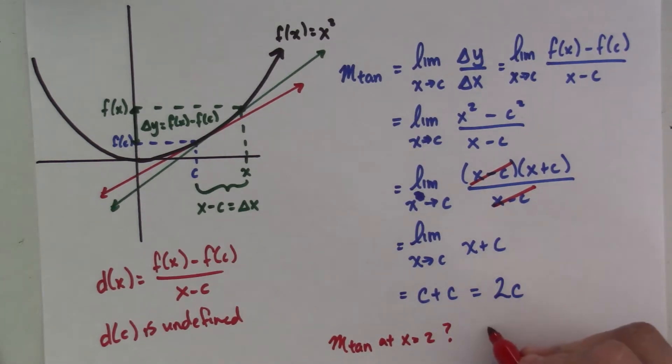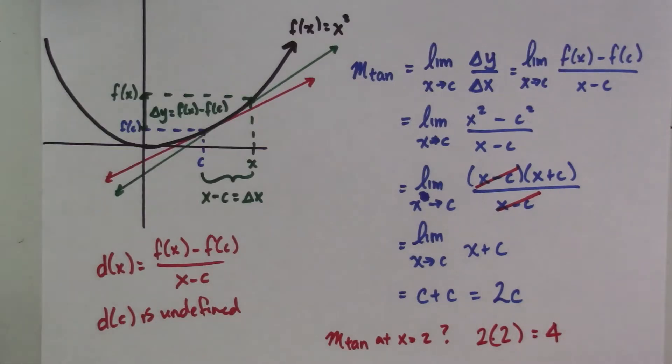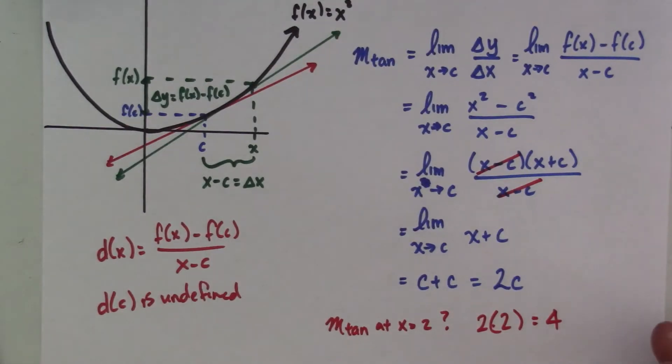Well, I would just say that it is 2 times 2, which is 4. So, the slope at 2 is 4. And that's what that tells us.